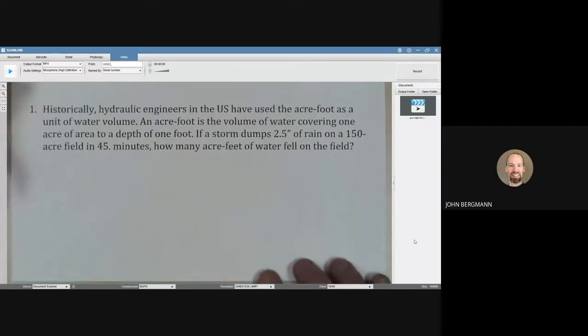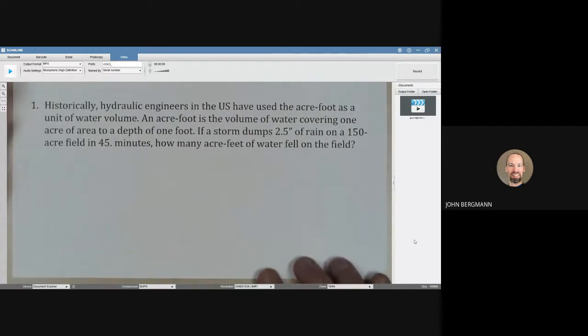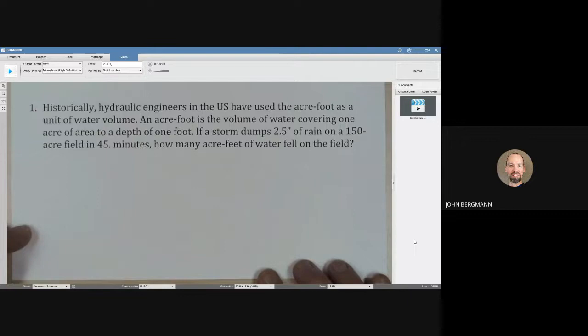Historically, hydraulic engineers in the US have used the acre-foot as a unit of water volume. An acre-foot is the volume of water covering one acre of area to a depth of one foot. If a storm dumps two and a half inches of rain on a 150 acre field in 45 minutes, how many acre feet of water fell on the field?